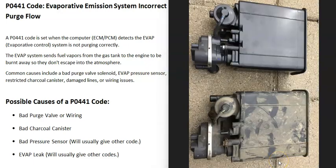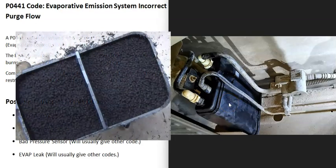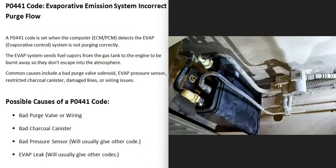The next possible cause is an issue with the charcoal canister, which is located underneath the vehicle near the gas tank. The charcoal canister has little charcoal pellets inside that help filter the gas vapors. If it becomes clogged — due to age or other reasons — the gas vapors won't be able to pass through it and reach the purge valve. To test it, you can feed air into the vapor inlet side and check that it comes out the other side. I've made videos on this — link is in the description.